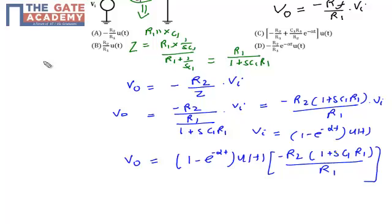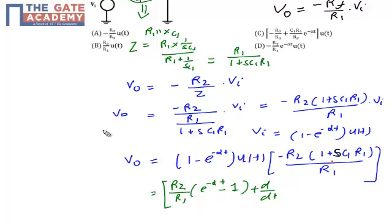After multiplying these two expressions, we get (R2/R1) · (e^(−αt) − 1) plus a differentiation term, since S can be replaced by d/dt — we know that integration is replaced by 1/s and differentiation is replaced by d/dt. So S is replaced by d/dt.